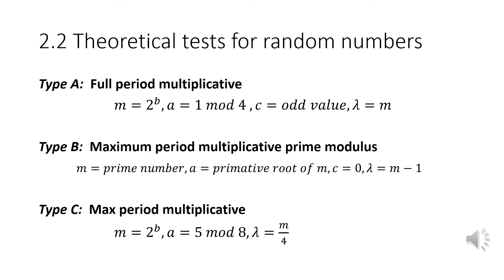When looking at the different types of tests for random multiplicative generators, there's really only three. We have a full period multiplicative generator, maximum period for prime modulus, and then a max period multiplicative. One thing to note is that the output of type one is identical to the output of type three. It's just the way that the values of M, A, and C are oriented.